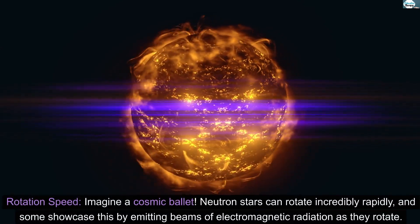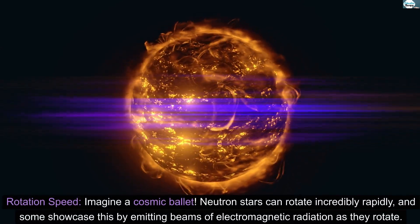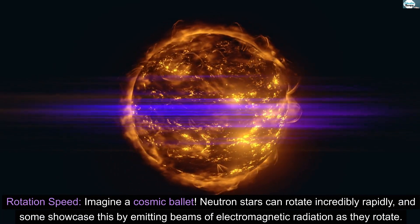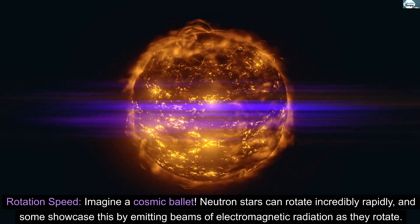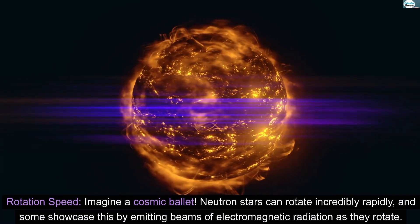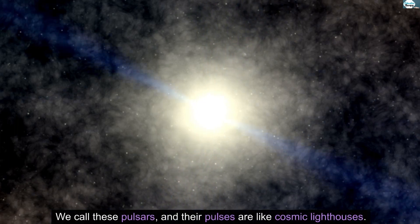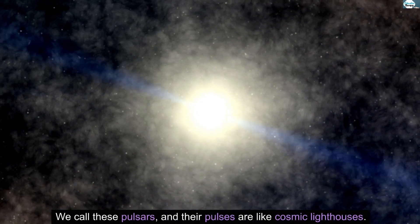Rotation speed. Imagine a cosmic ballet. Neutron stars can rotate incredibly rapidly, and some showcase this by emitting beams of electromagnetic radiation as they rotate. We call these pulsars, and their pulses are like cosmic lighthouses.